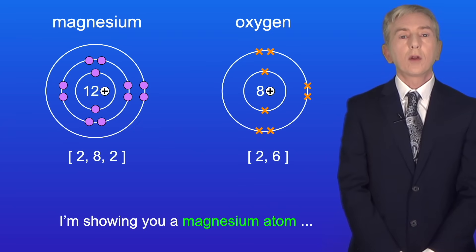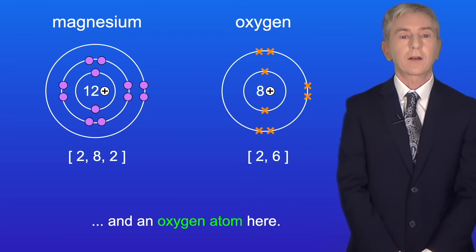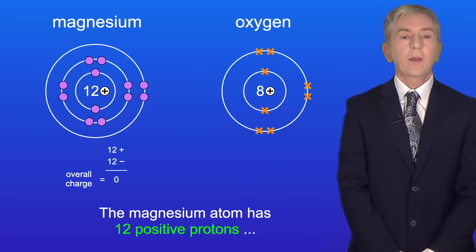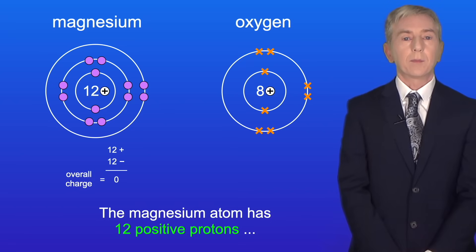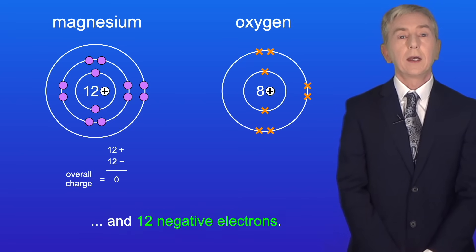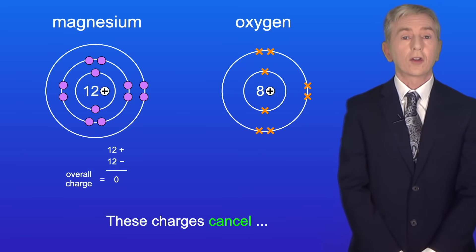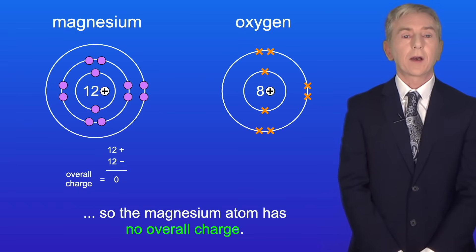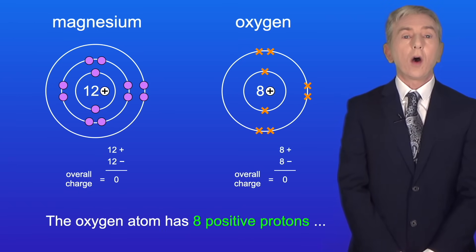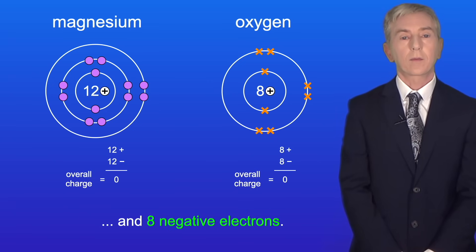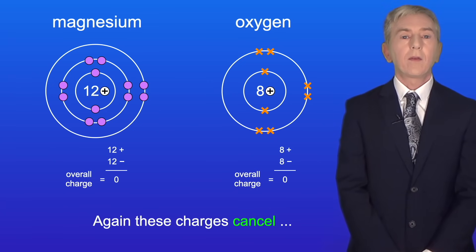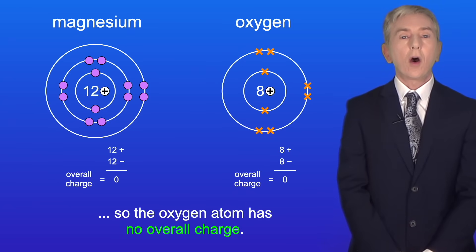Here is a magnesium atom and an oxygen atom. The magnesium atom has 12 positive protons and 12 negative electrons — these charges cancel so the magnesium atom has no overall charge. The oxygen atom has 8 positive protons and 8 negative electrons, and again these charges cancel so the oxygen atom has no overall charge.